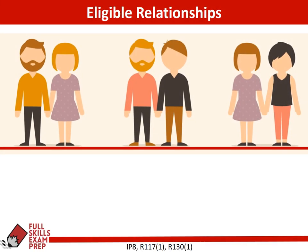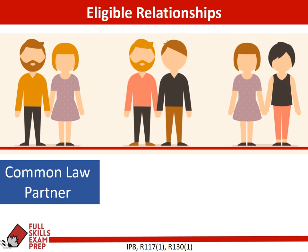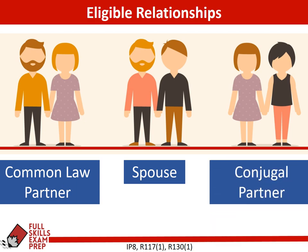The first step in order to really analyze this area as it relates to your exam is to take a look at eligible relationships for sponsoring someone as a spouse, common law partner, or conjugal partner. As a general base, remember that people can sponsor others as common law partners, as spouses, or as conjugal partners. It's absolutely essential for you to understand the differences between all three of these.